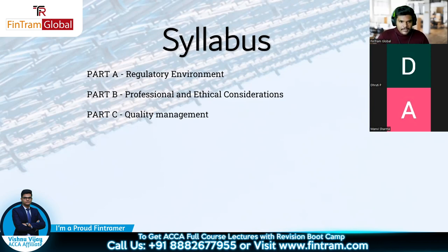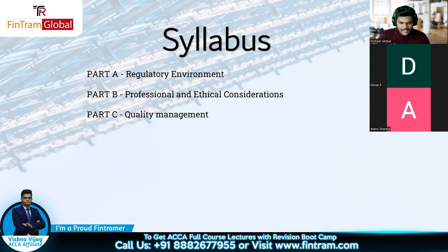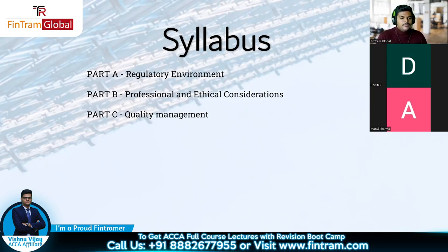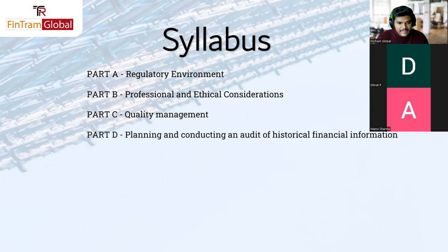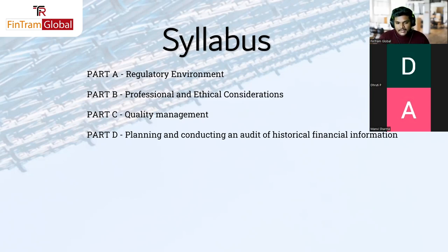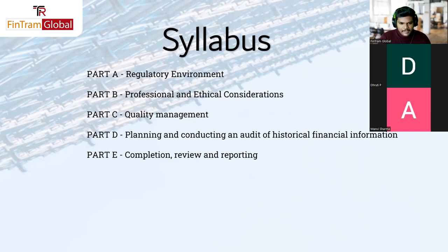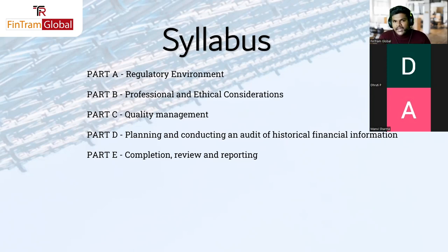Part C covers what standards we must adhere to in order to ensure that auditors are providing their opinion and issuing their audit report with the utmost quality. After Parts A, B, and C, we start learning the overall audit process from the planning phase to the reporting stage. Parts D and E cover the entire audit process including all the auditing standards — ISA standards, ISQC standards, etc.